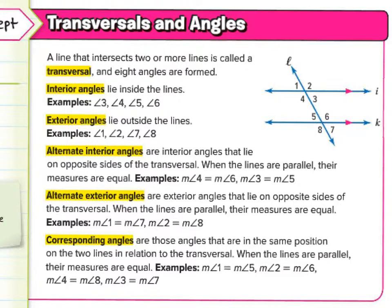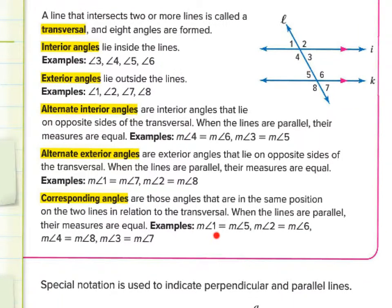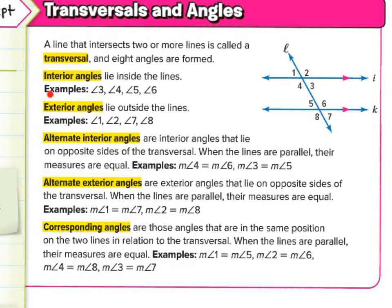Measure of angle one equals measure of angle five; angle two equals angle six; angle four equals angle eight; and angle three equals angle seven. Please make sure you familiarize yourself with these words. You can print this section of the page or make a note in your book. You can write your own definitions or the exact definitions — whatever helps you remember them.